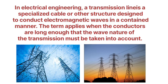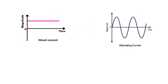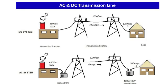Transmission lines can carry both alternating current as well as direct current, or a combination of both. This is a very important characteristic of the transmission line.